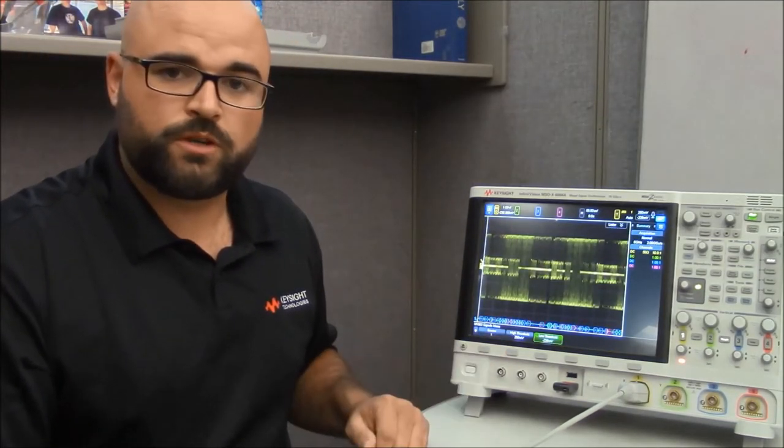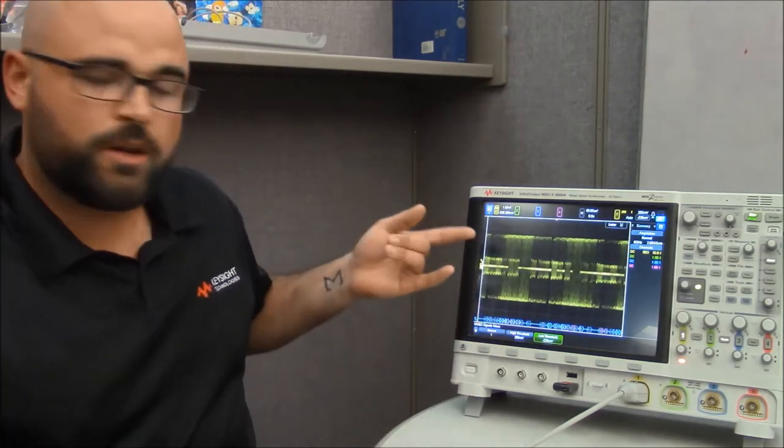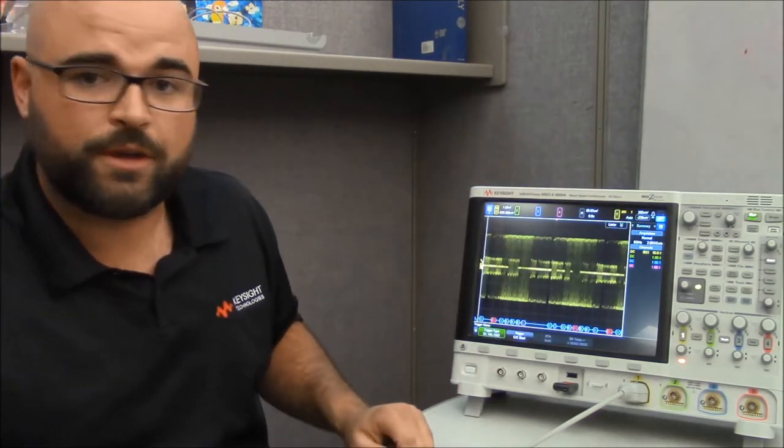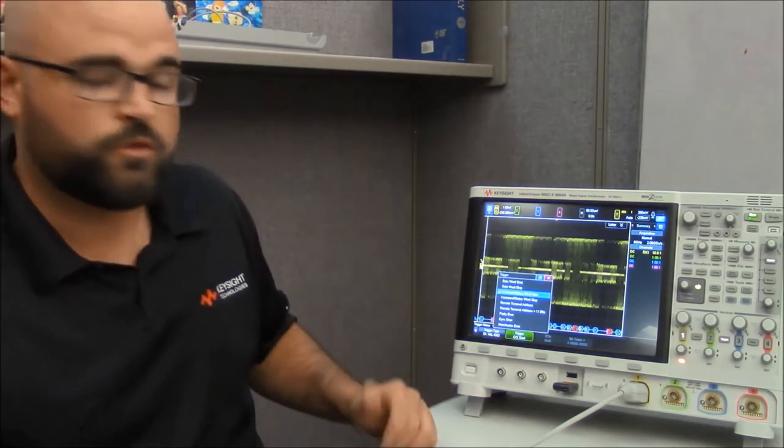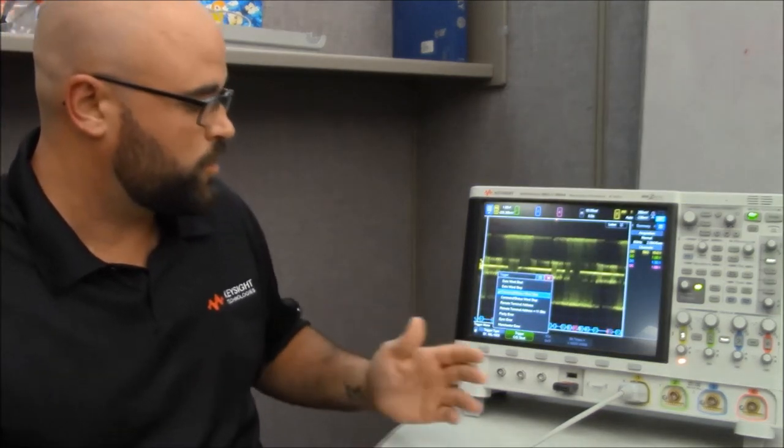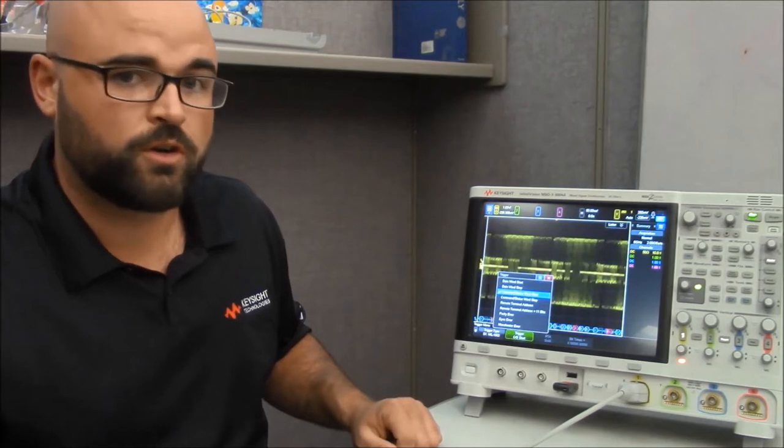Now that we have our signal up and running and decoding properly on the screen, we can dial into the trigger settings. The auto setup already set up our triggering thresholds and gave us a default trigger condition. I'm going to press the yellow T up at the top of the screen as a shortcut and see there's a variety of different triggering options for this bus. In this particular case, we're triggering on all commander status words start conditions.